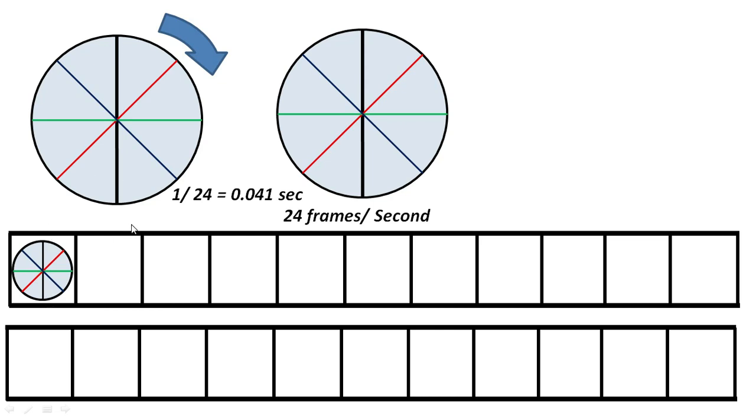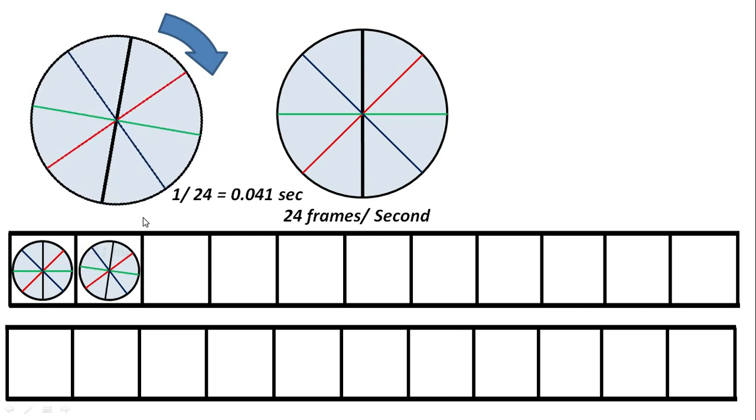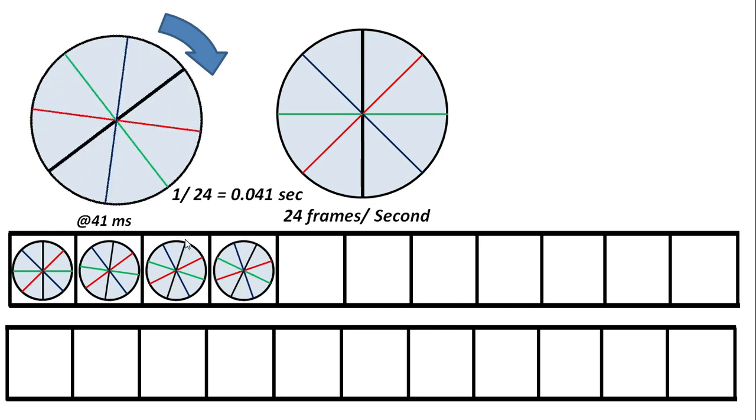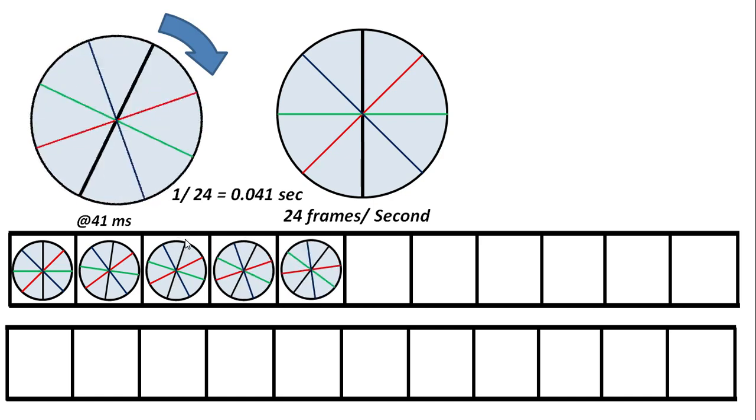The first picture is taken at this position. After 41 milliseconds, the second picture will be taken by the camera. By that time, the wheel would have rotated slightly towards the right. And after again another 41 milliseconds, the third picture will be captured. Now the wheel would have rotated further towards the right. Similarly, it will capture images every 41 milliseconds and it will be framed like this.